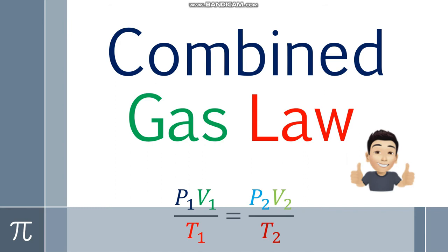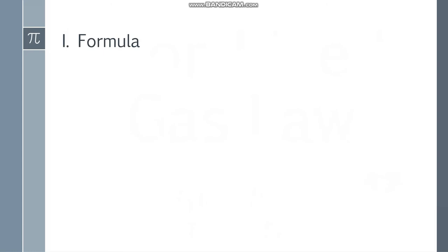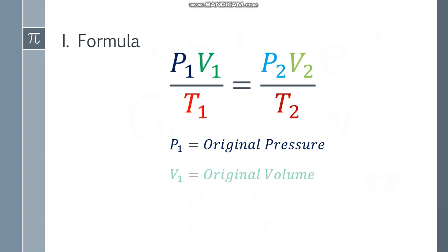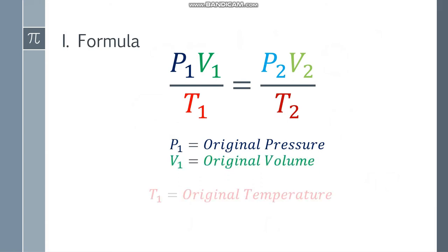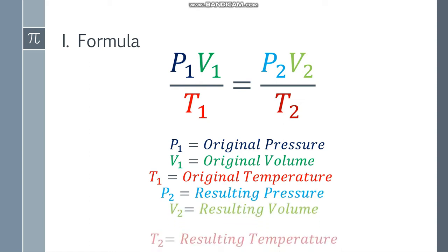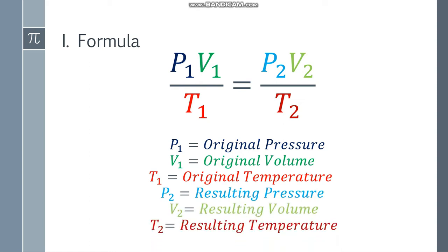Welcome back to my channel METO language and we're going to discuss combined gas law. Let's start with the formula. We have P1 V1 over T1 is equal to P2 V2 over T2. P1 will be the original pressure, V1 refers to the original volume, T1 is the original temperature, P2 will be the resulting pressure, V2 will be the resulting volume, and T2 will be the resulting temperature.